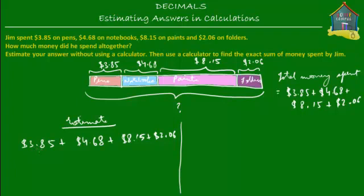When you want to round up to the nearest whole number, check the first digit after the decimal point. If that digit is greater than or equal to 5, you increase the whole number part by 1. In this case, 8 is greater than 5, so 3.85 is estimated as 4 — since 8 is more than 5, you add 1 to 3 to make it 4. For 4.68, the first digit after the decimal point is 6, and 6 is greater than 5, so you round it up and 4 becomes 5.